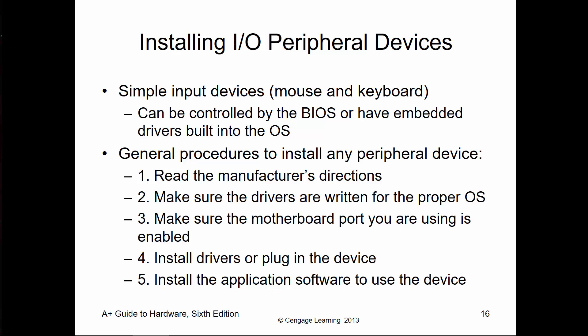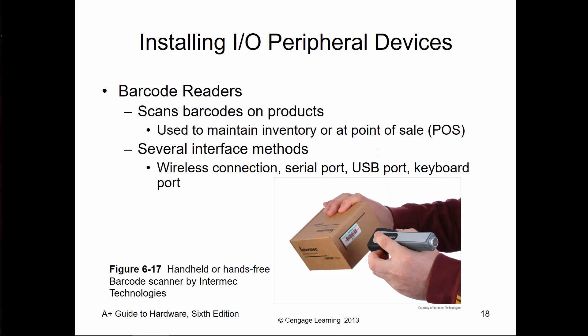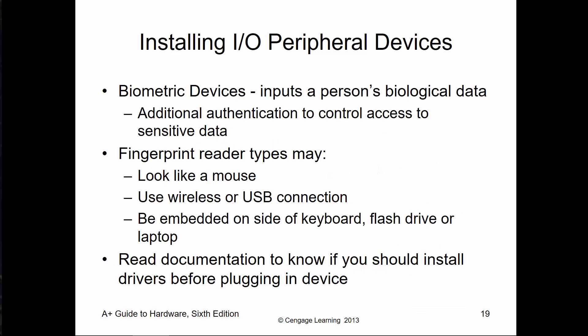To install peripherals, make sure ports are enabled through the BIOS, read the manufacturer's details, and have the current drivers. For mouse or keyboard, it could be USB or PS/2 — read the documentation. For a barcode reader, normally used on a point-of-sale system, it could be wireless, serial, or USB. Most installations are plug-and-play, but always double-check manufacturer details.